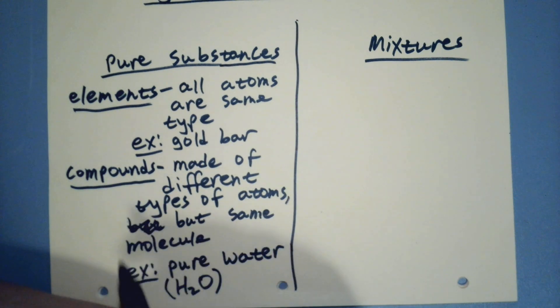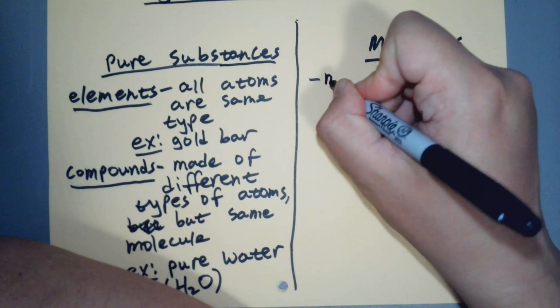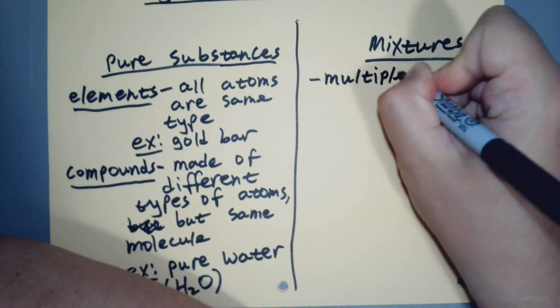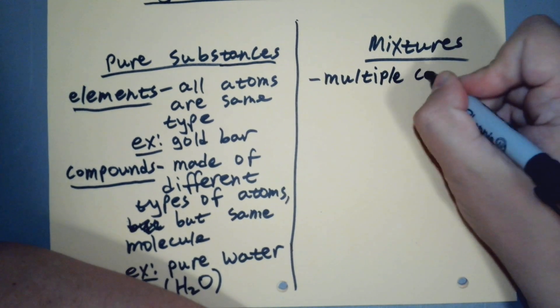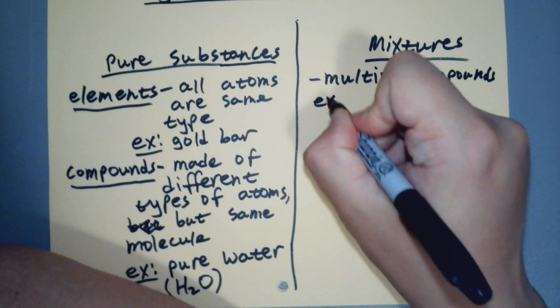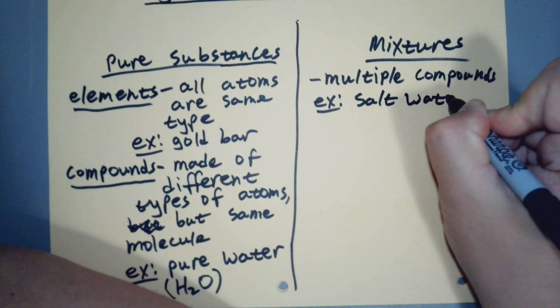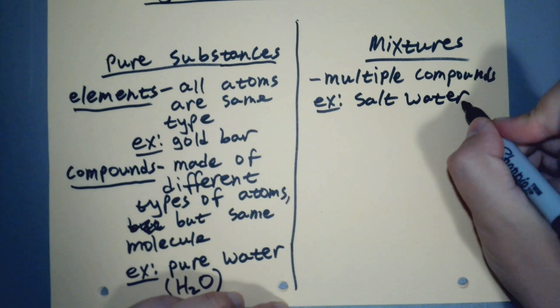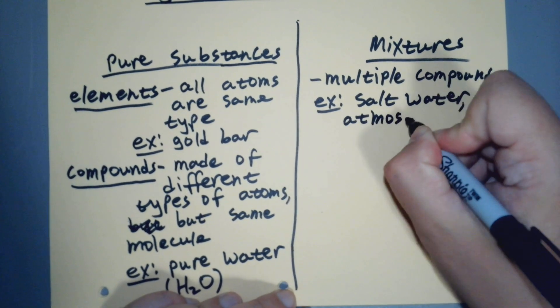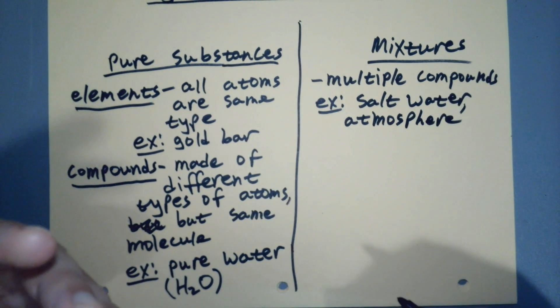They're different types of atoms - hydrogen atoms, oxygen atoms - but they're put together in a molecule the exact same way, all hanging out in a glass. Mixtures are typically made from multiple compounds, for example salt water or our atmosphere. We breathe oxygen but there's a bunch of nitrogen gas with it, so we're inhaling oxygen, nitrogen, there's CO2 in the atmosphere.